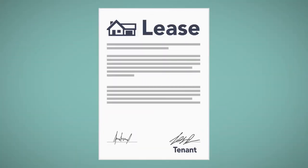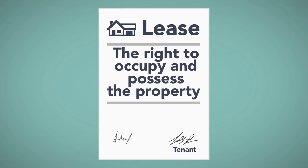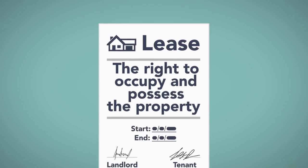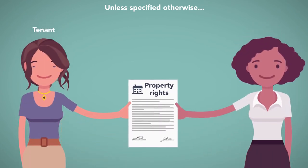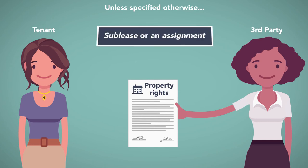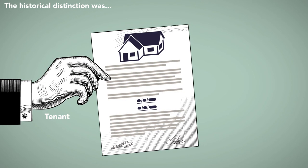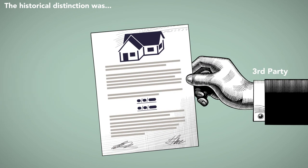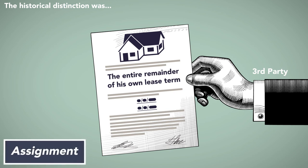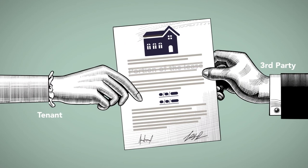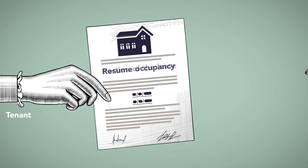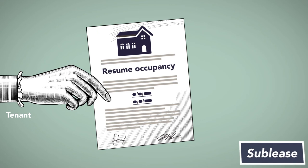A lease conveys to the tenant the right to occupy and possess the property of the landlord for a specified time. Unless specified otherwise, this comes with the ability to transfer the right to possess and occupy the property to a third party. This transference of rights is known as a sublease or an assignment. The historical distinction was that if the tenant transfers the property to a third party for the entire remainder of his own lease term, then the arrangement is considered an assignment. If the transfer is only for a portion of the lease, after which the tenant will resume occupancy, then a sublease has been created.